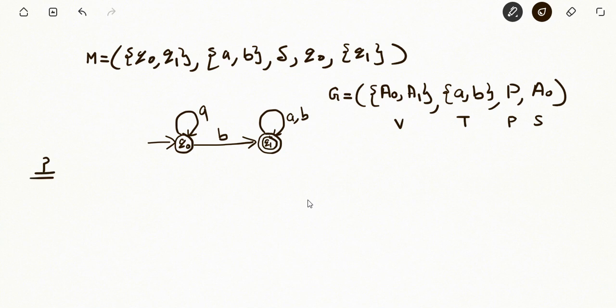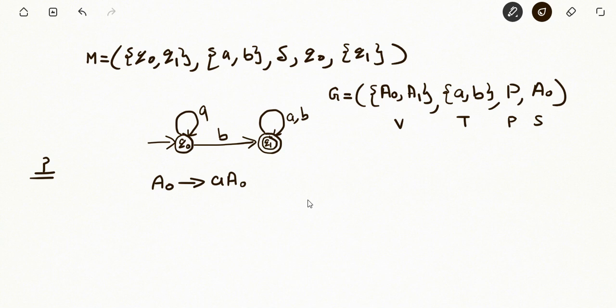Now how P is constructed — consider that q₀ upon receiving a goes to q₀. Correspondingly we have the variable or non-terminal A₀. So we write: A₀ → a A₀. This is not the final state, so only one production is going to be induced.